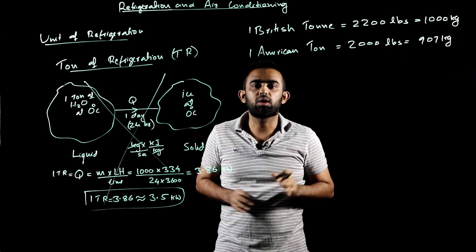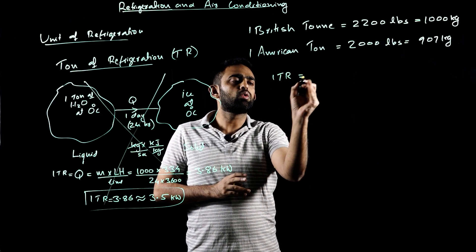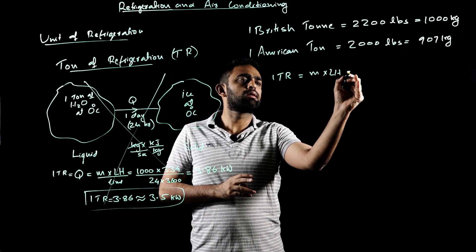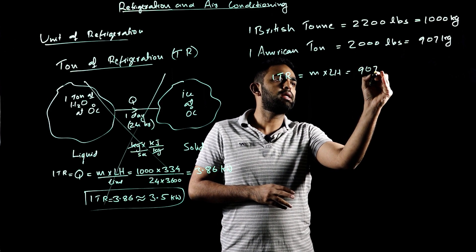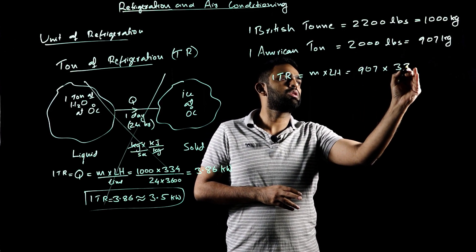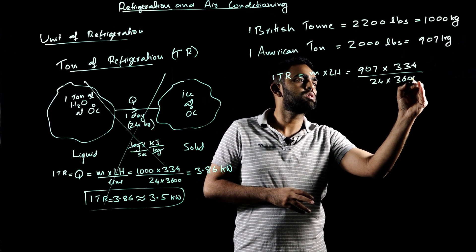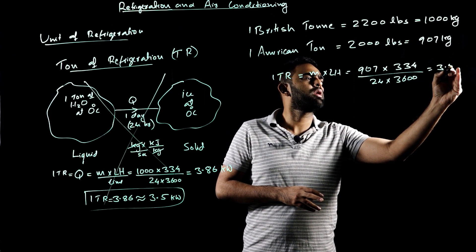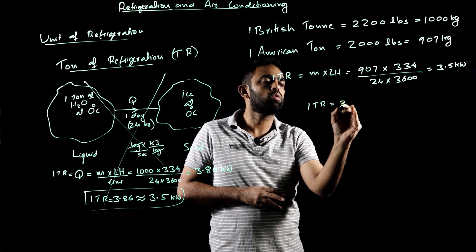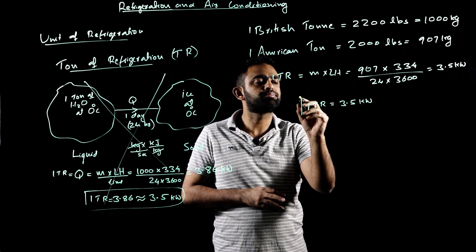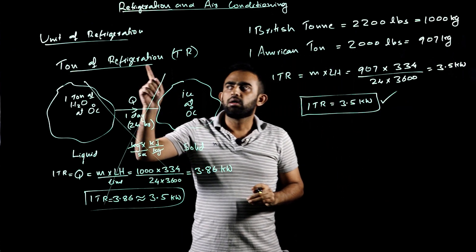For the American ton convention, 1 TR uses mass of 907 kilograms. So: 907 kilograms multiplied by 334 kilojoules per kilogram, divided by 24 hours converted to seconds (× 3,600), gives approximately 3.5 kilowatts. So 1 TR equals 3.5 kilowatts — this is the correct way of defining the unit of refrigeration.